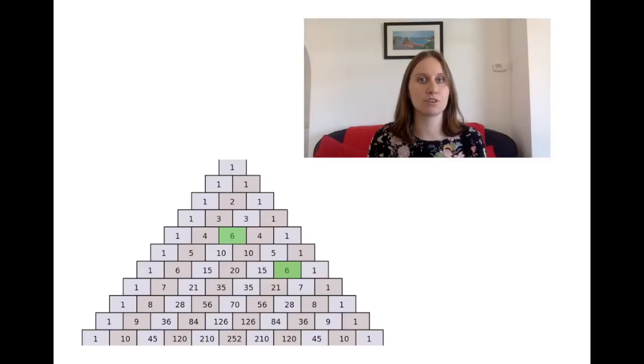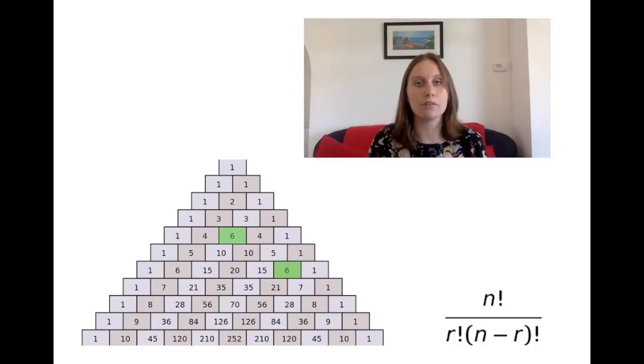And so for example that top six is how many different ways there are of choosing two things from a group of four. So it's four choose two. It's four choose two because we count from zero. So I'm counting from zero down to four in the rows and then counting from zero into two inwards. So four choose two and there's formula for that so actually each of these cells in the triangle can be found using this formula where n is the size of the group and r is the number of things that you're choosing.